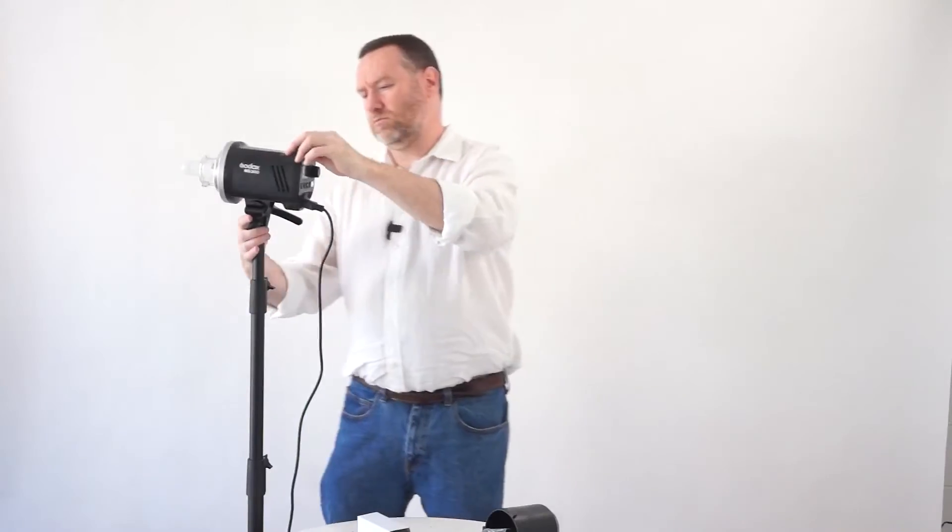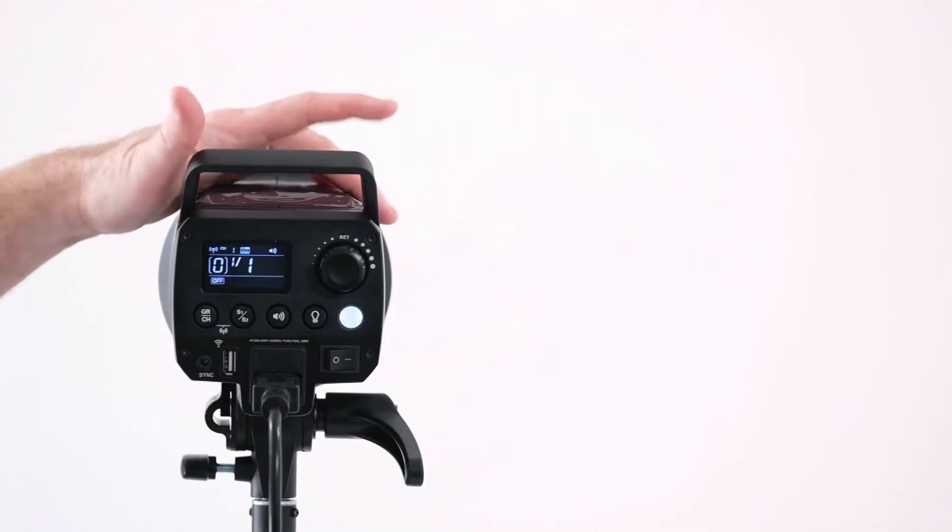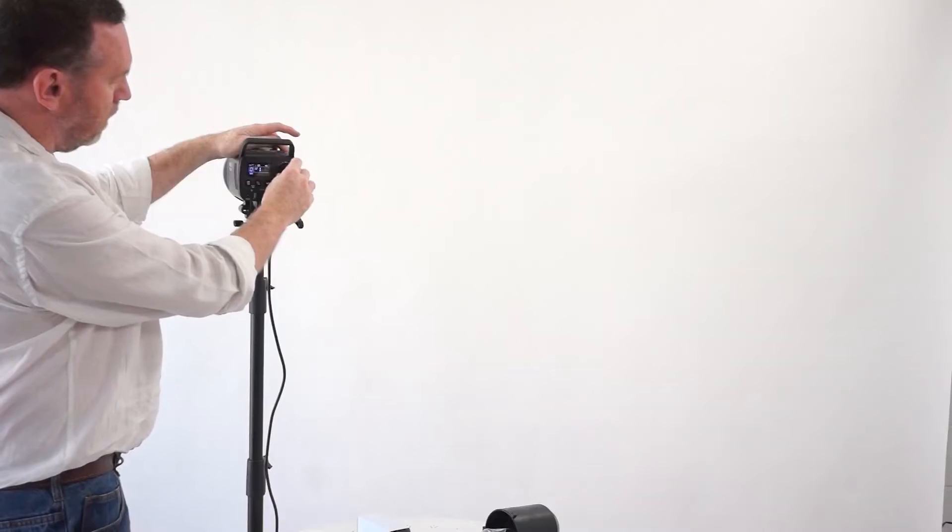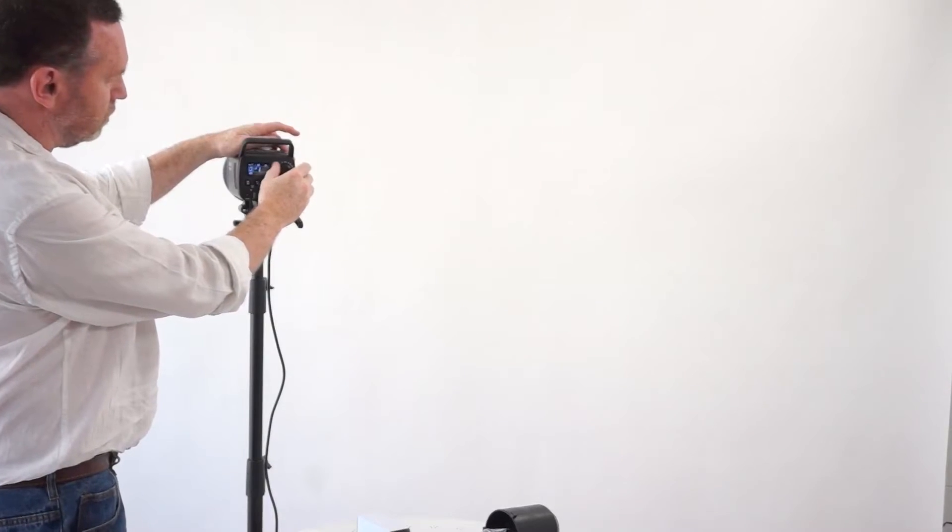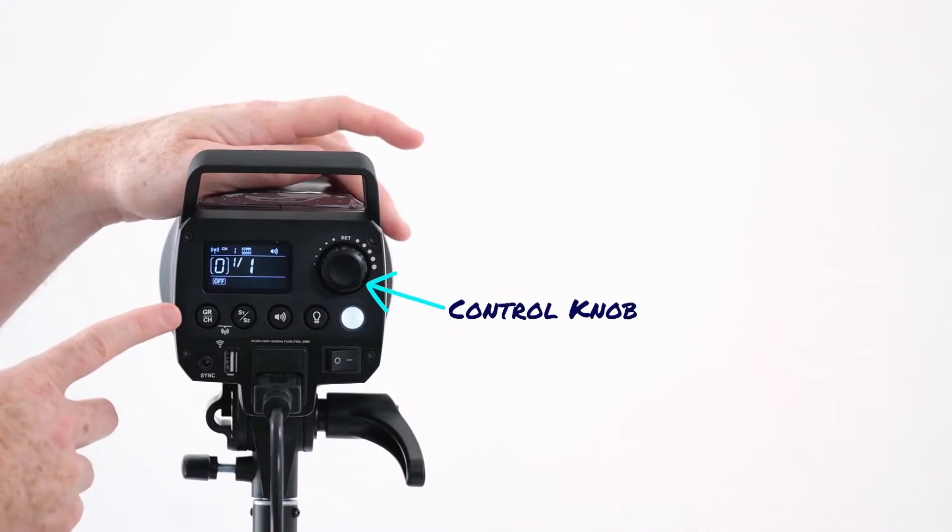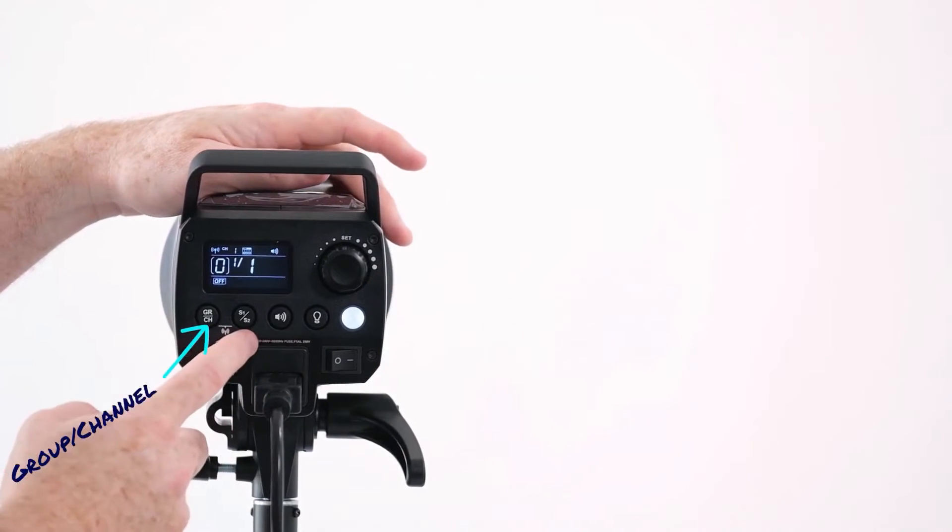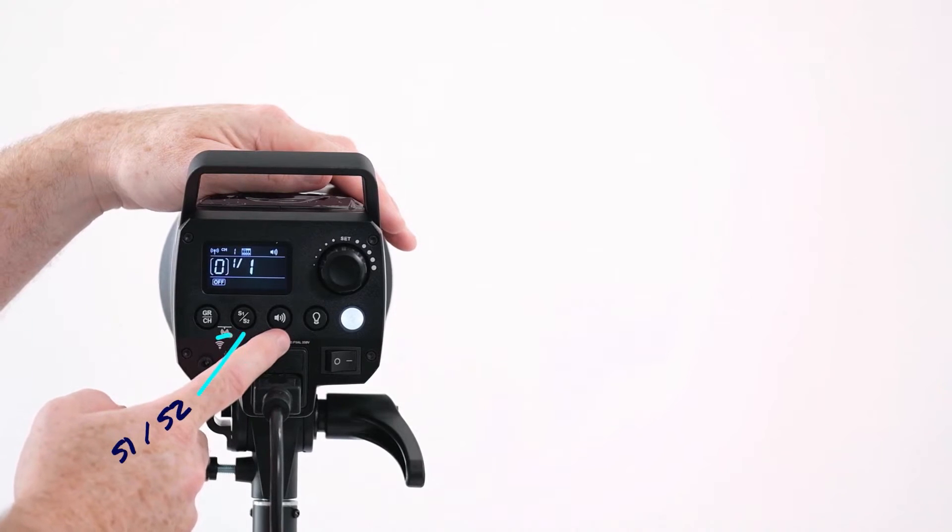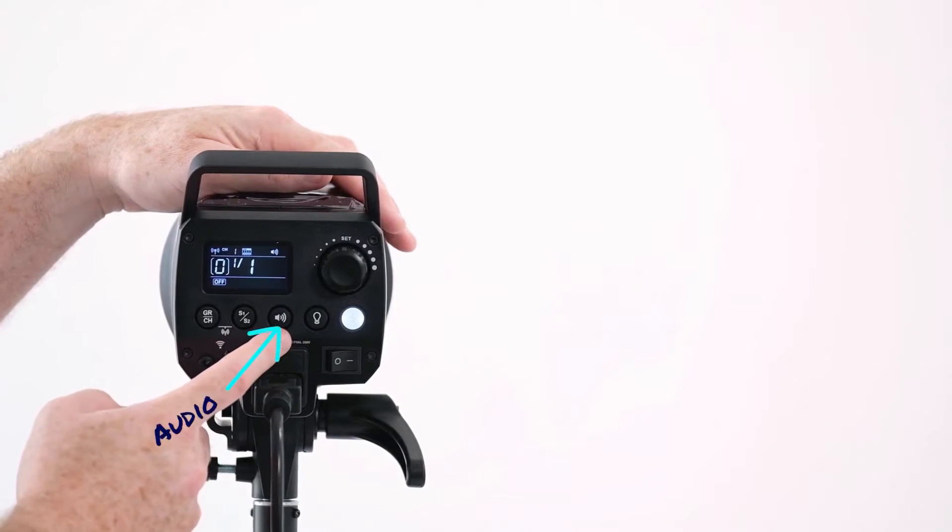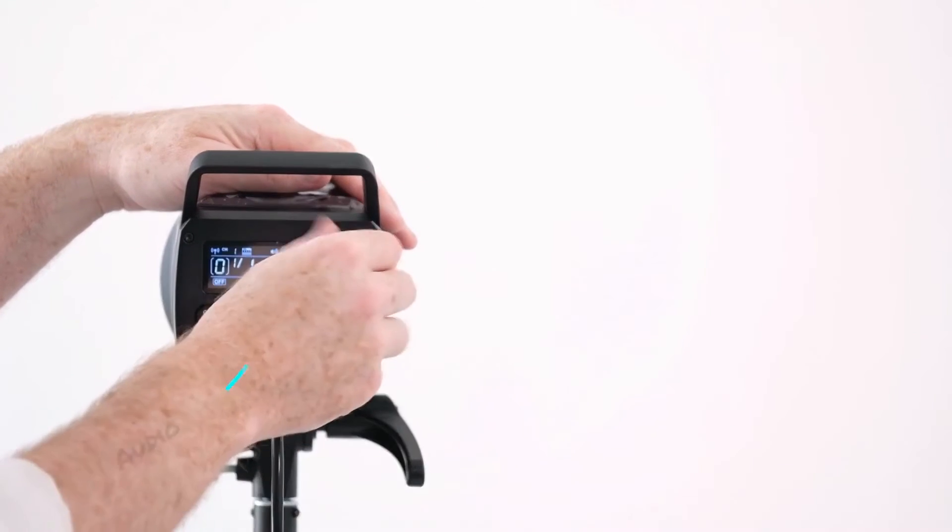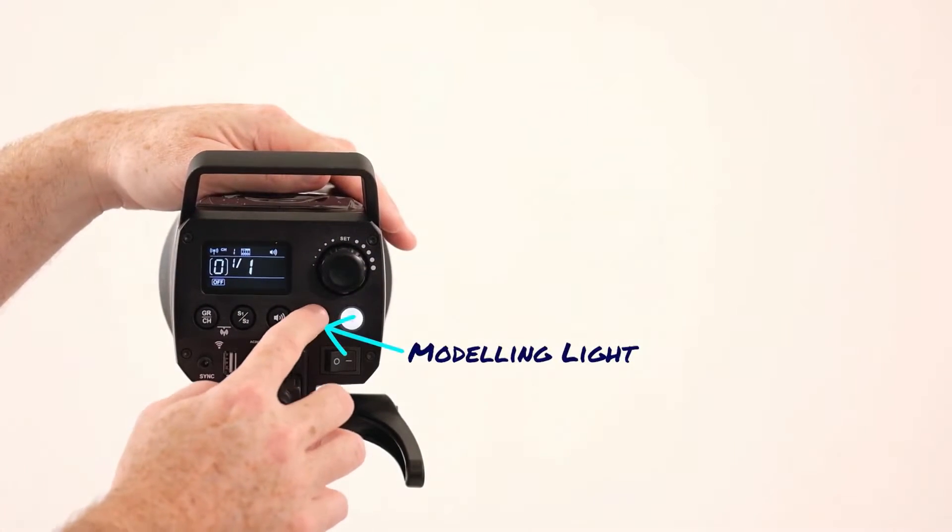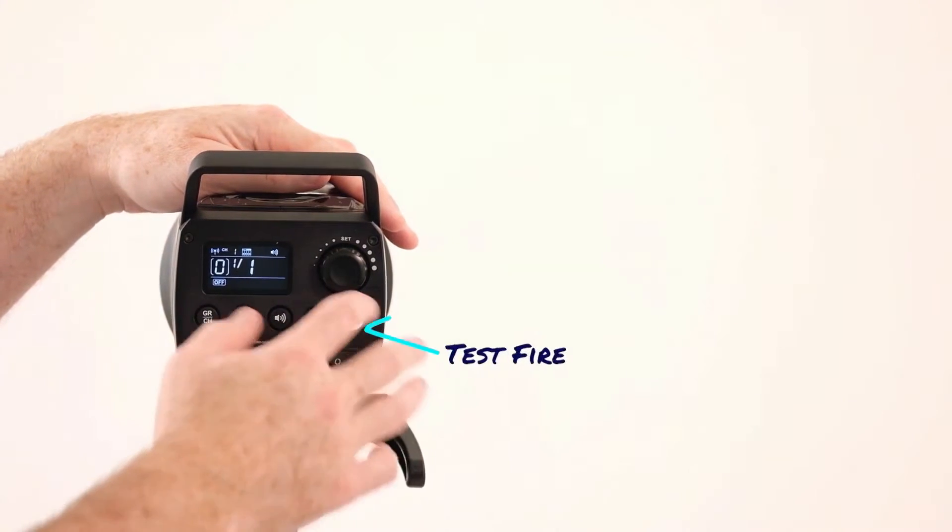So on the back of the unit. Okay so on the back here we have LCD panel and digital readout. We have our control knob which can be used for making various adjustments. We have a group and channel button here. We have S1 and S2 they're the slave modes. We have the button for the audio which is basically that beeping you're hearing as I turn that. The modelling light button for turning that on and off in different modes and the test fire button itself.